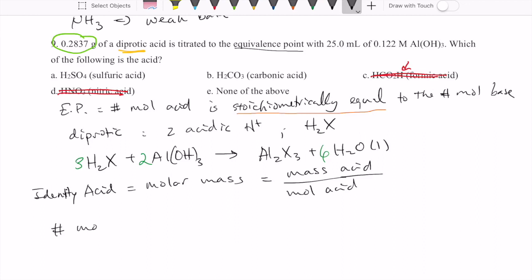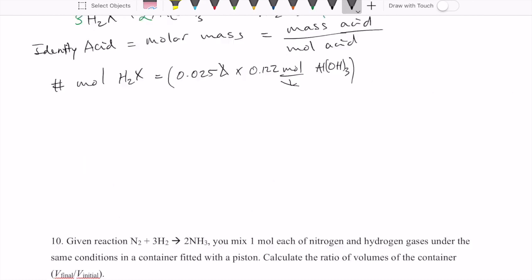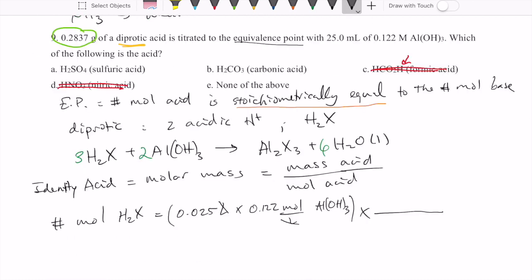Let's calculate the number of moles of the acid, which we can calculate if we know the number of moles of the base. Number of moles of the base is volume, 25 milliliters or 0.025 liters, times 0.122 moles per liter aluminum hydroxide, which I can then multiply with the stoichiometric relationship, 3 to 2, and that cancels out the aluminum hydroxide to give me the number of moles of the diprotic acid.